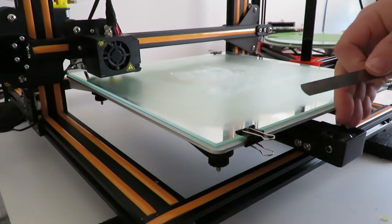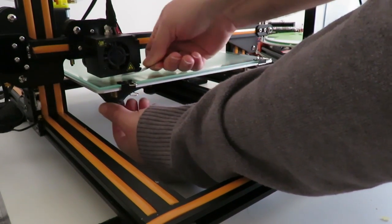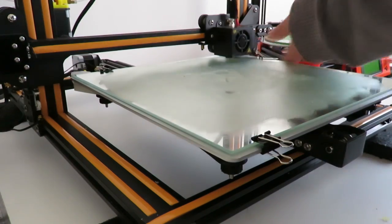Just take the feeler gauge, insert it under the nozzle, and turn the knobs under your print bed until it touches the feeler gauge. Slip the gauge out from under and proceed to the next corner.